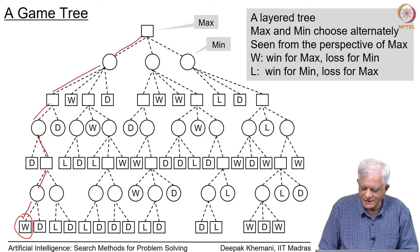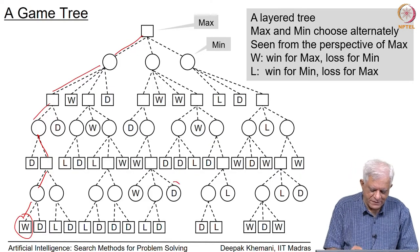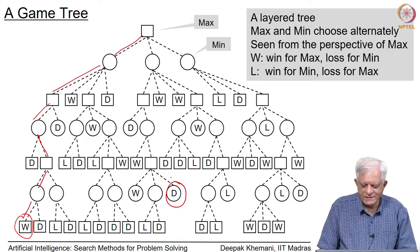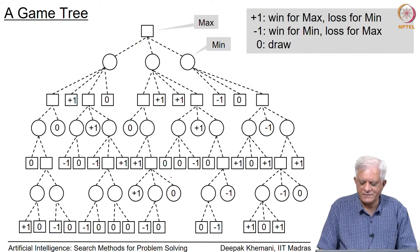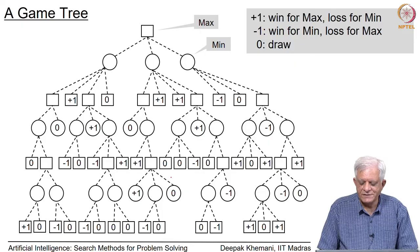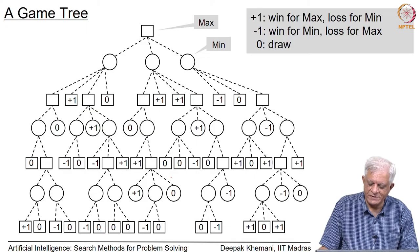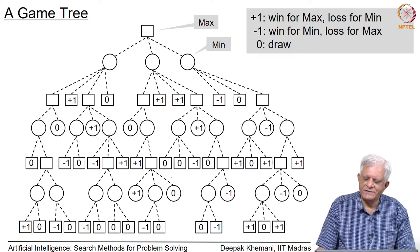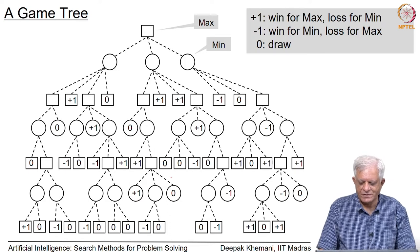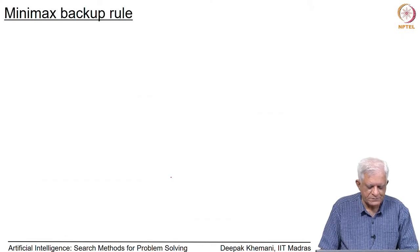If we ended up in a leaf node labeled L, that means Min has won the game. D stands for a draw, meaning neither side has won. To quantify the payoffs, we label them with +1 for a Max win, -1 for a Min win, and 0 for a draw. Max is called Max because it is trying to reach the score of +1, which is the maximum of the three possible outcomes, and Min is called Min because it is trying to choose the smallest value, which is -1.